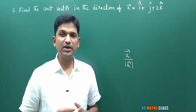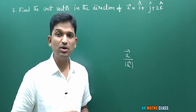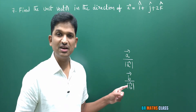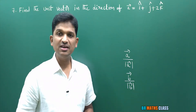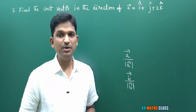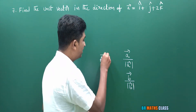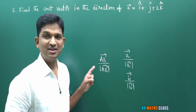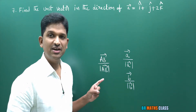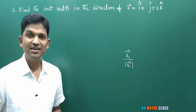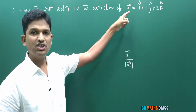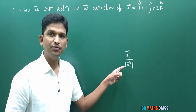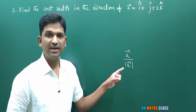Similarly, if you want to find a unit vector along the direction of b⃗, you need to calculate b⃗ divided by magnitude of b⃗. If you want to find unit vector in the direction of ab⃗, you need to calculate ab⃗ divided by magnitude of ab⃗. To calculate the unit vector in the direction of a⃗, I need a⃗ and its magnitude.